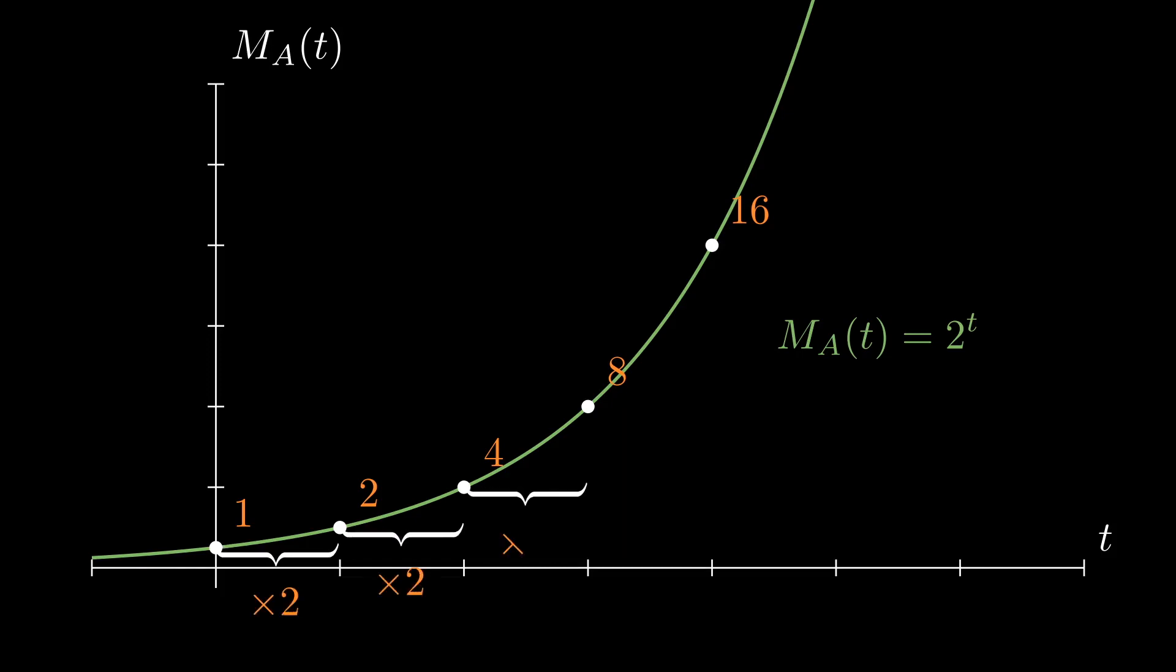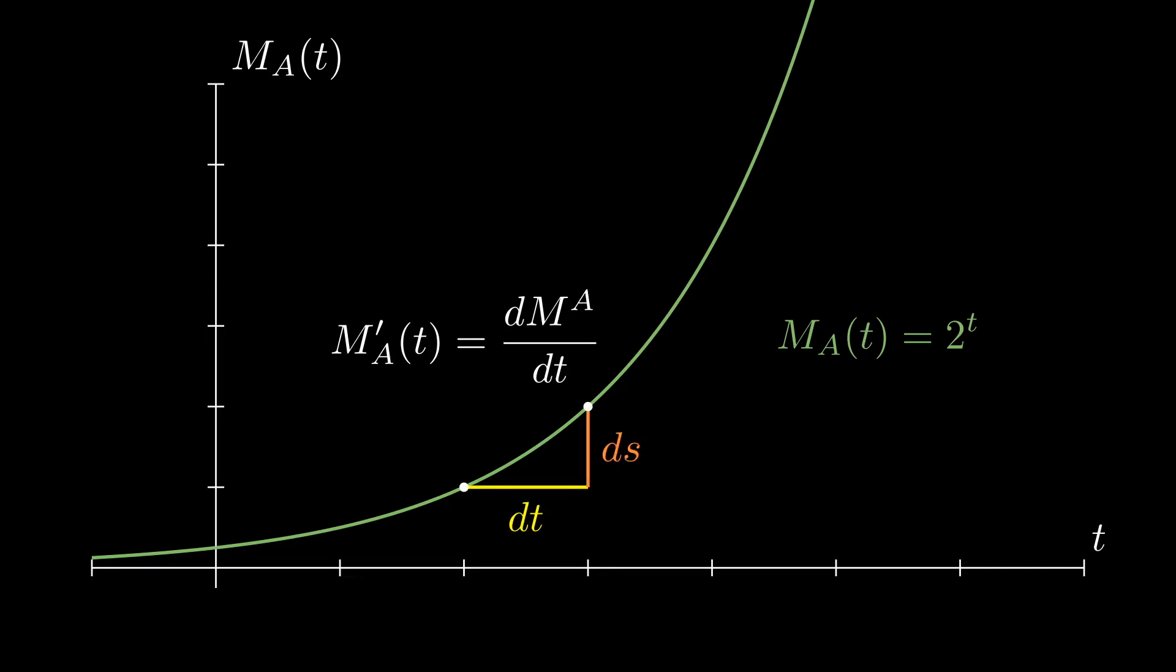For the derivative of this function we now want dM over dt, the change in population over the change in time. When taking a look at the rate of change over one day we can see that the rate of change equals the population size at the start of the day. Let's take the change in population dM from 4 to 5 over the course of one day. We can see that this is 16 divided by 1 giving us the initial value of the population from the start of the day. This is true for all dt's taken from the graph.